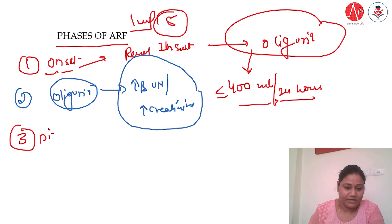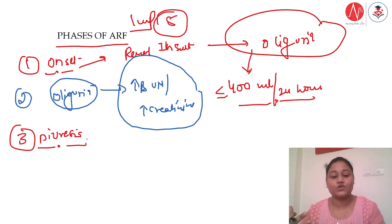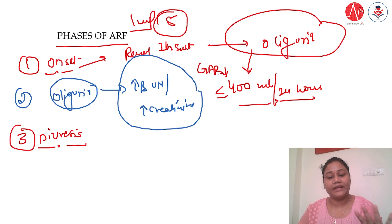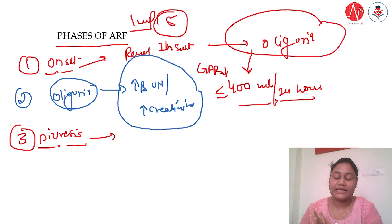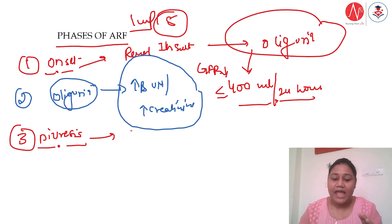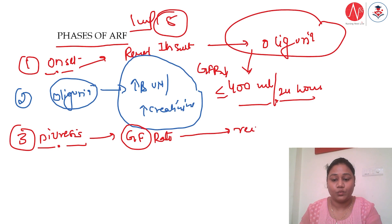Phase three is the diuresis phase. In this phase, compensatory mechanisms slowly start. The glomerular filtration rate, which was decreased in the oliguria phase, gradually begins to increase, and the body starts to filter out the accumulated waste products and move toward recovery.